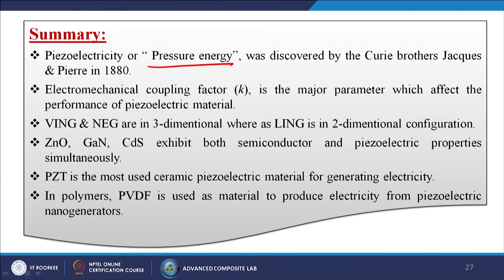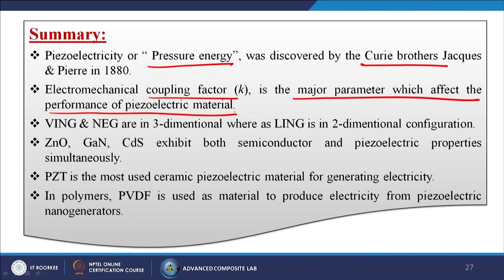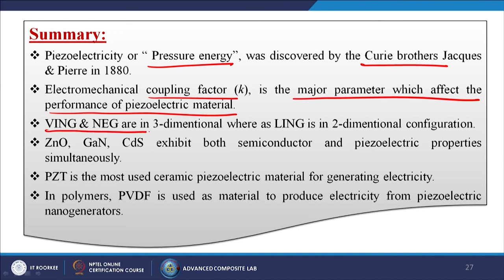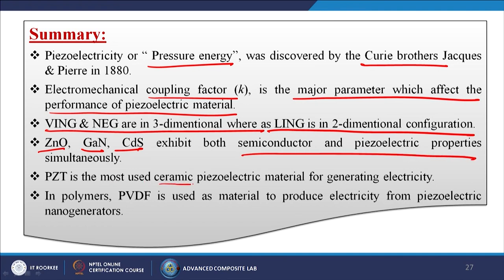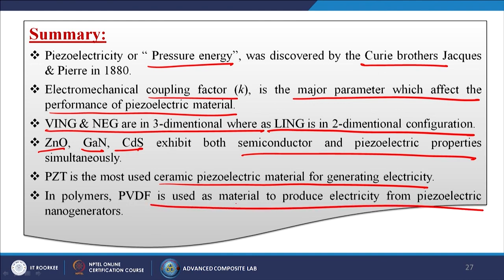In summary: piezoelectricity (pressure energy) was discovered by the Curie brothers Jacques and Pierre Curie in 1880. The electromechanical coupling factor is the major parameter affecting the performance of piezoelectric materials. VING and NEG are three-dimensional configurations while LING is two-dimensional. Zinc oxide, gallium nitride, and cadmium sulphide exhibit both semiconductor and piezoelectric properties simultaneously. PZT is the most used ceramic piezoelectric material. In polymers, PVDF is the most versatile material used for generating electricity from piezoelectric nanogenerators.